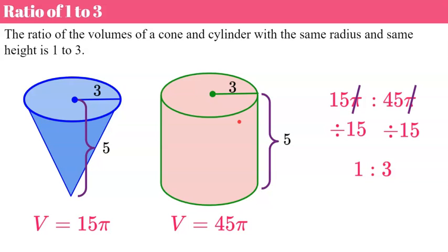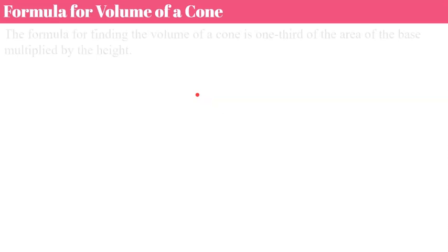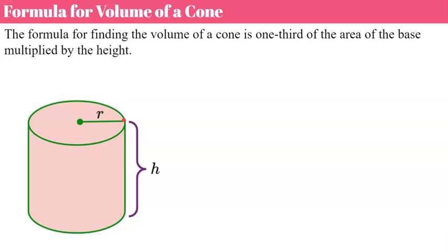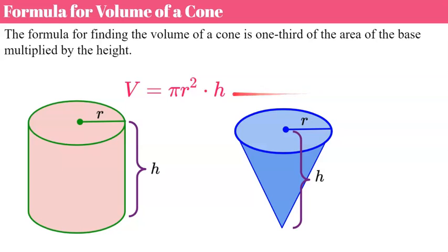Now we're going to use that idea to come up with our formula for the volume of a cone. The formula is one-third of the area of the base multiplied by the height. For a cylinder, the volume was πr² (the area of the base) times height. For a cone, it's one-third of that — one-third times πr² times h.